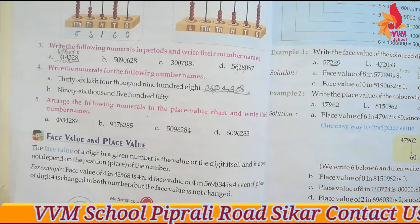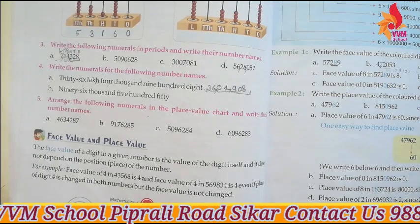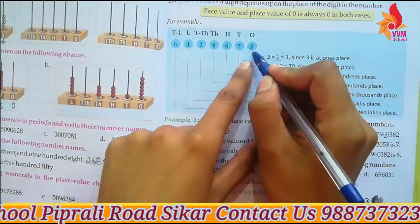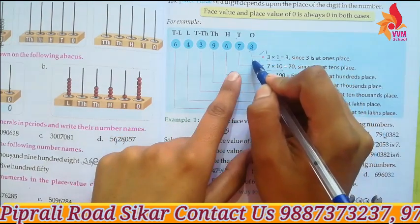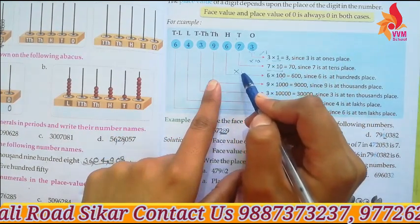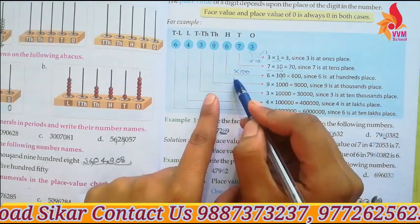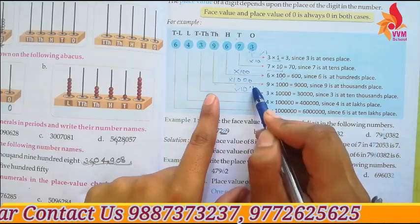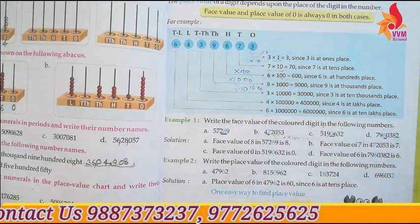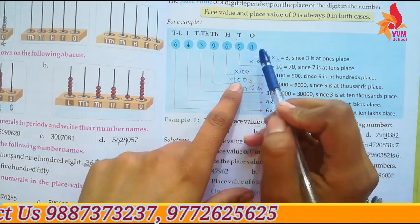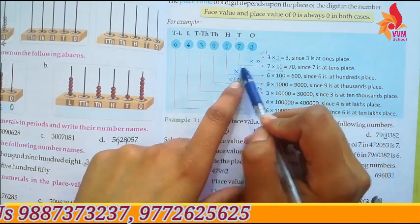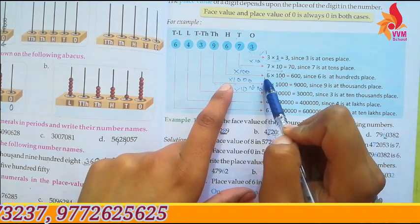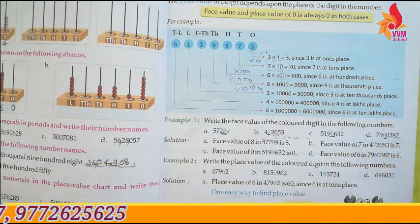Then comes face value and place value. Place value depends on the chart. We solve it like this: the number at ones place × 1, the number at tens place × 10, the number at hundreds place × 100, the number at thousands place × 1,000, the number at ten thousands place × 10,000. For example, 3 at ones = 3×1; 7 at tens = 7×10; 6 at hundreds = 6×100.